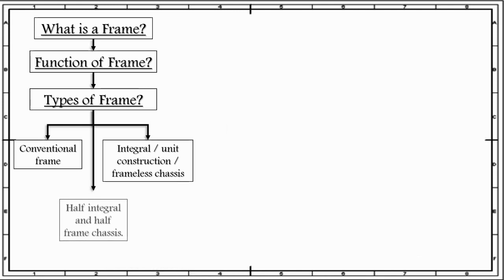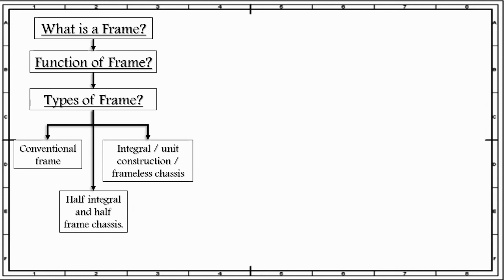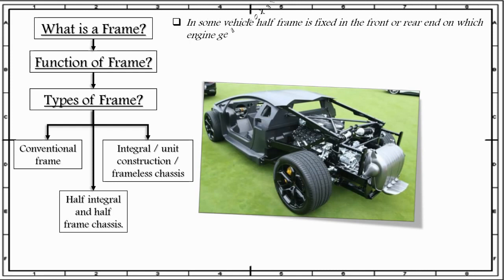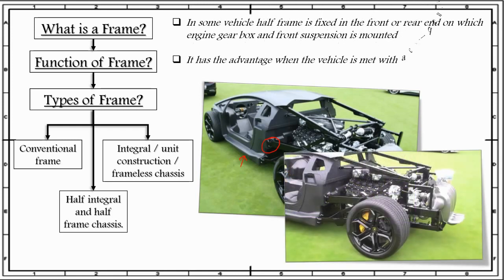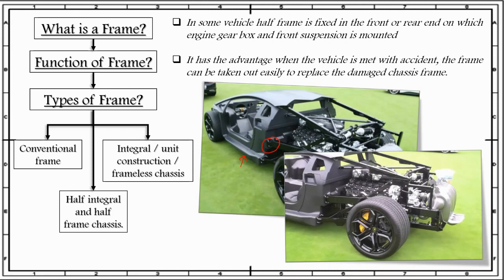The last category into which you can divide the frame is known as half integral and half frame chassis. In some vehicles, a half frame is fixed at the front or rear end on which the engine, gearbox, and front suspension are mounted. As we can see in this figure, the frame part is directly bolted to the structure or to the body of the vehicle. It has the advantage that when the vehicle is met with an accident, the frame can be taken out easily to replace the damaged chassis frame. So when this vehicle is in an accident, you can easily remove this frame from here and you can remove the chassis components like engine, suspension, and gearbox which are being damaged, and you can easily replace them.